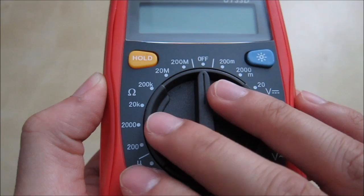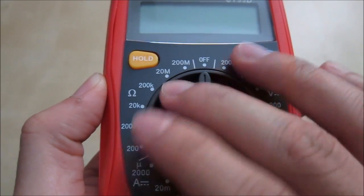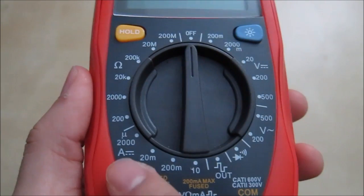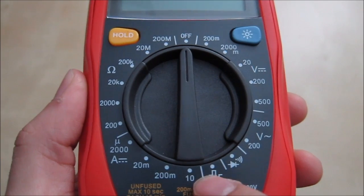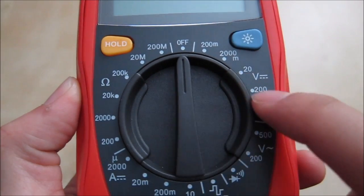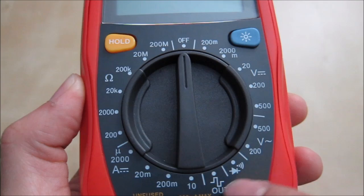As far as being a multimeter, you have what looks like ohm setting here. So you can check your ohms and down here you have your amperage setting over here. And then you have your voltage. This looks like DC and this looks like AC over here.